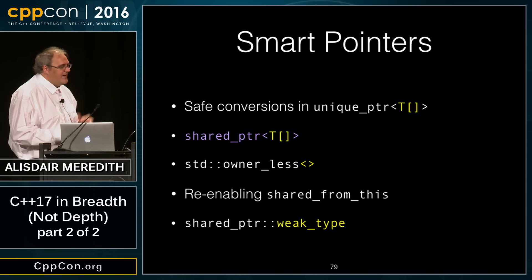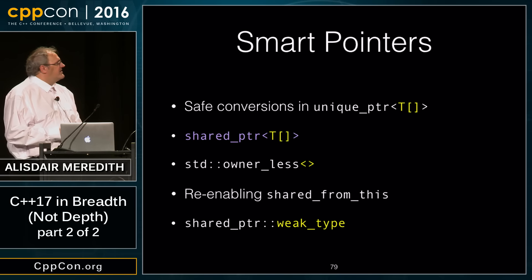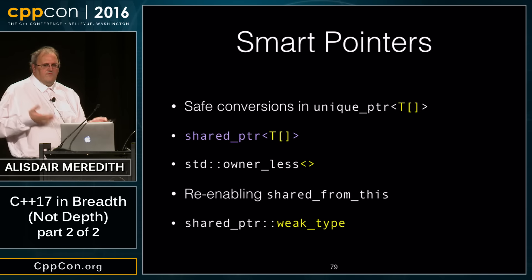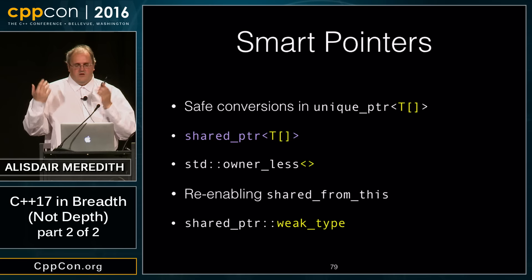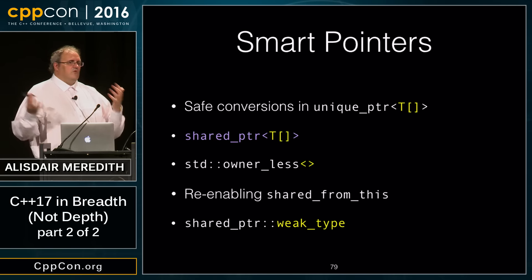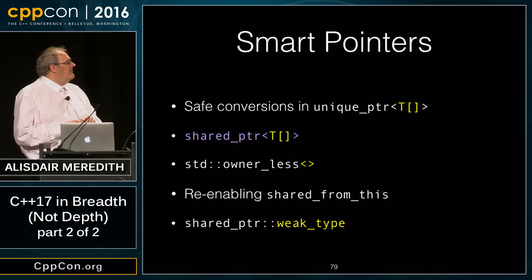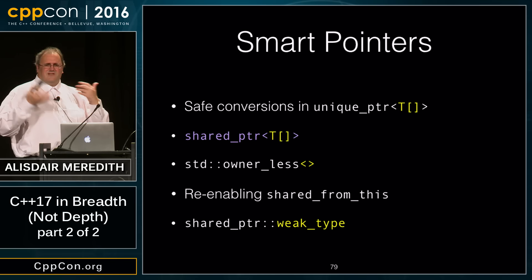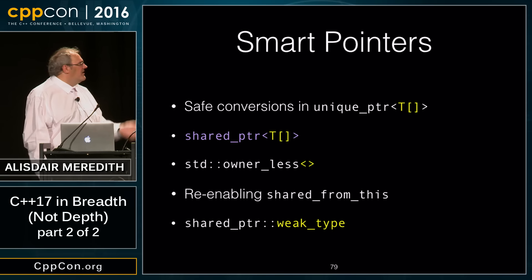Smart pointers: we found holes in conversions with unique_ptr to an array that could lose the array-ness and call the wrong deleter. You had to jump through hoops to hit those cases, but we found and closed them.